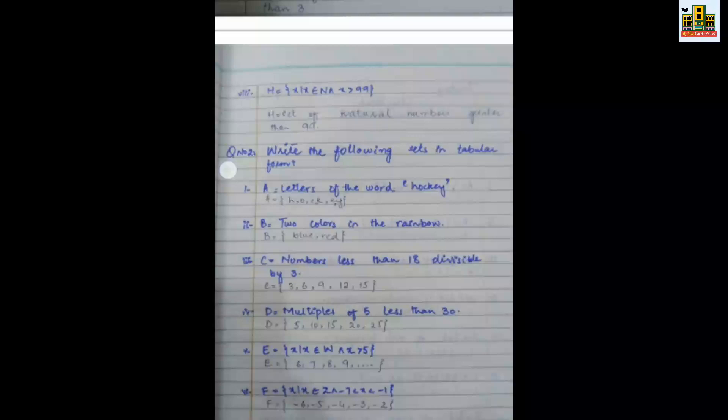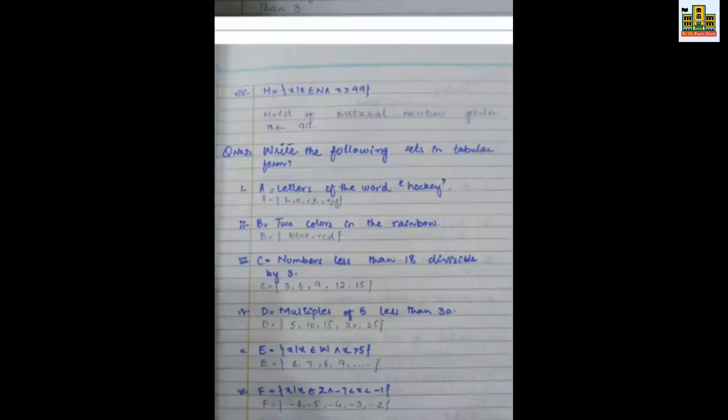Next you have to write x such that x belongs to z and minus 7 is less than x is less than minus 1. Okay? I mean minus 7 is not going to be included. Why? Because you have to write less than sign, less than equal to sign. If you have any problem, then you will ask in comments.